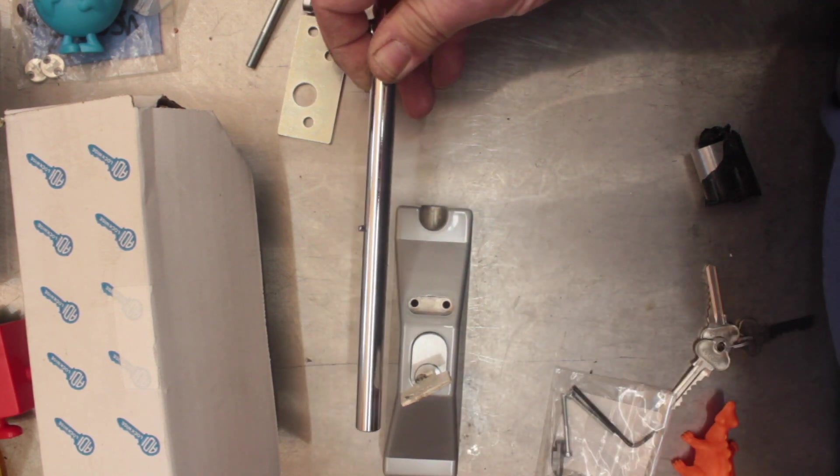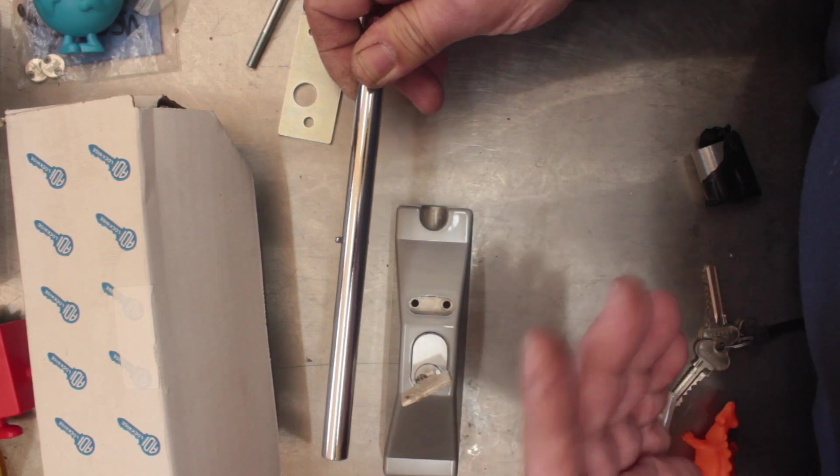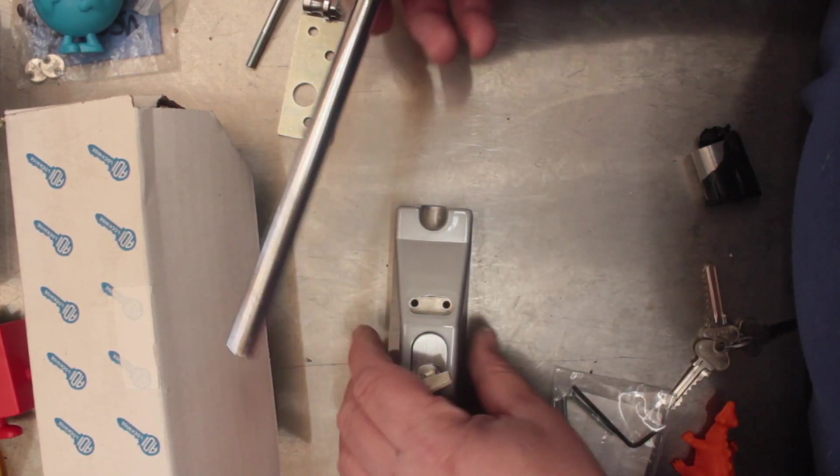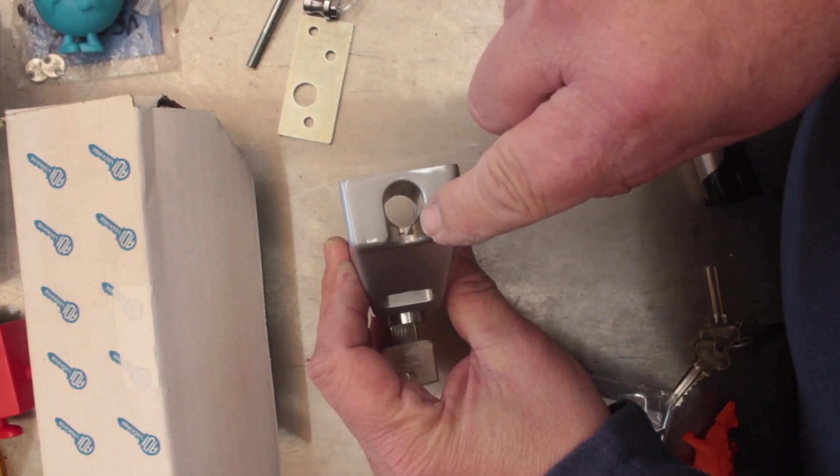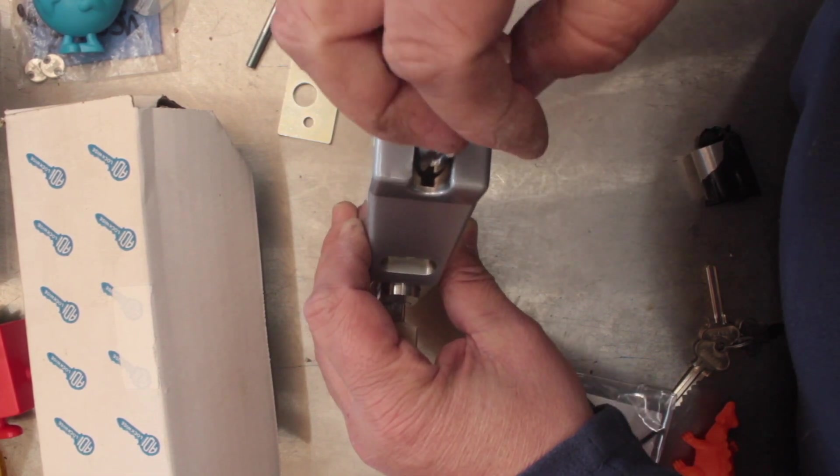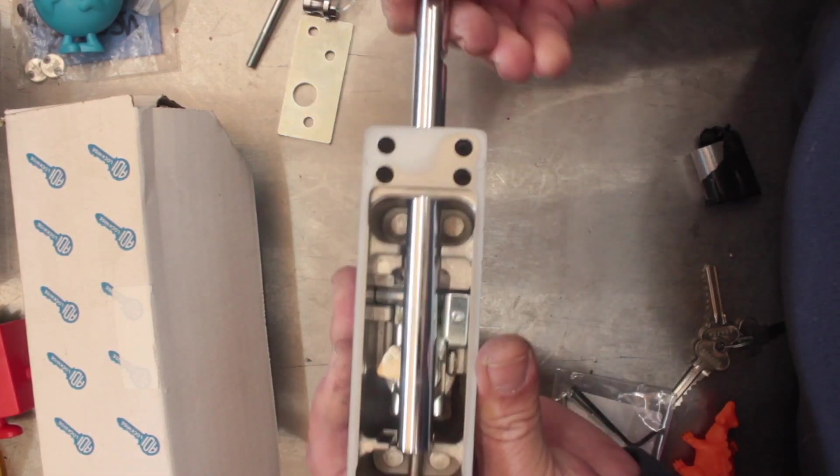Now what allows the bolt to go in and out of its removal track is this little pin here. I'm going to show you here—there's a little guide there for the pin.